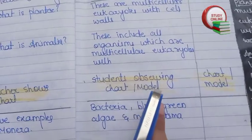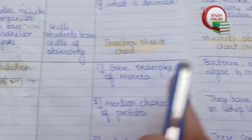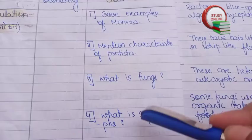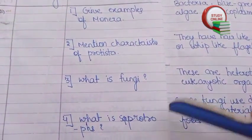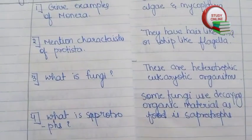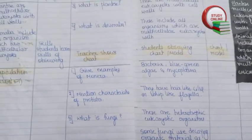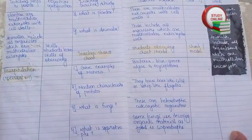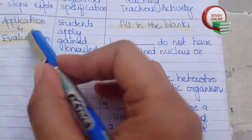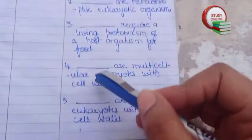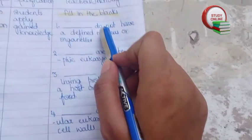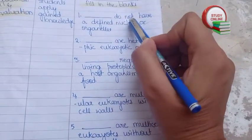The skills shown: the teacher shows the chart and students observe it. Here is the recapitulation section with four questions and their expected answers. For application and evaluation, I have added five fill-in-the-blank questions, which should be enough.